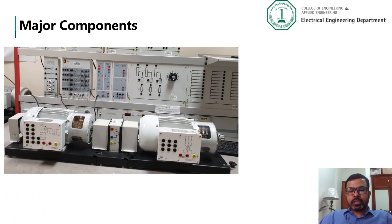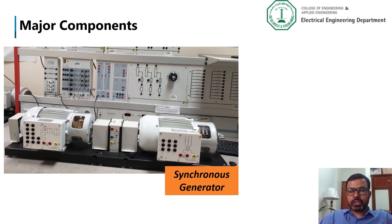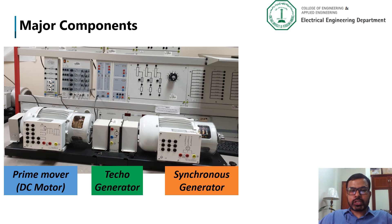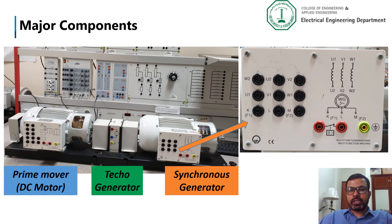Now let us see the major components of today's experiment. As you can see from the figure, on the right side we have a synchronous generator, which is basically the AC multifunction machine. On the left side we have the prime mover, which is basically the DC multifunction machine. In between, we have a coupling device to connect these two machines together, as well as a tachogenerator to measure the speed of the rotors. This is the zoomed image of the front panel of our synchronous generator.